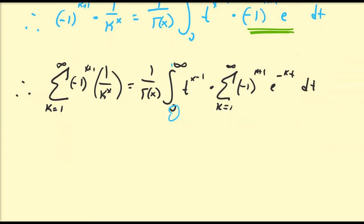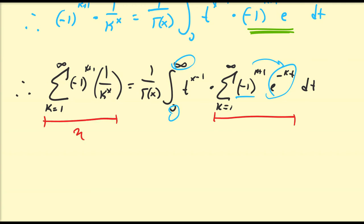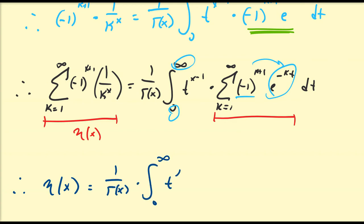Since t ranges from 0 to infinity and k is a positive number, e^(−t) is always less than 1, making the inner sum a geometric series with ratio −e^(−t). We can treat this as a geometric series, and since this is precisely the definition of the eta function, we get that eta of x equals (1/Γ(x)) times the integral from 0 to infinity of t^(x−1) times 1 divided by (1 minus (−e^(−t))). The common ratio is negative e^(−t).